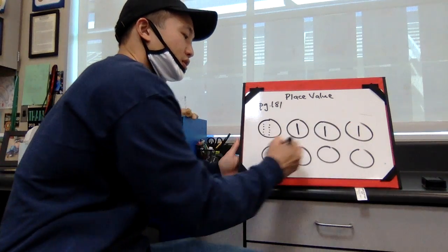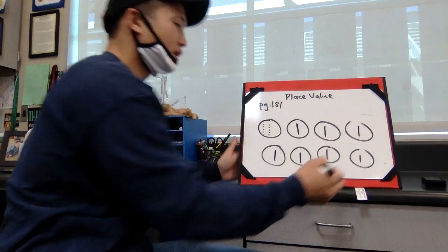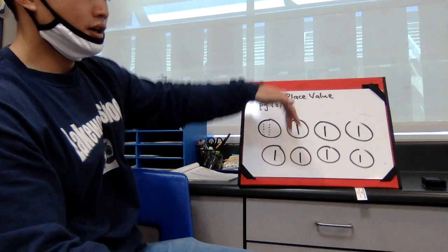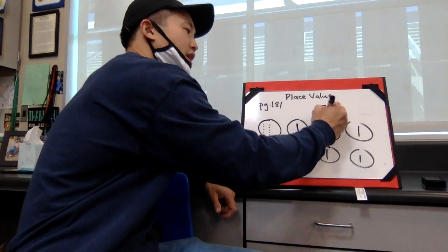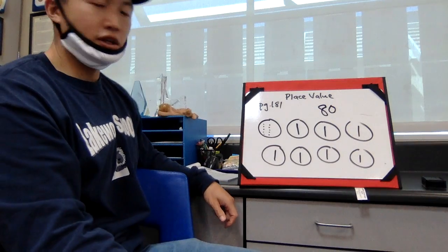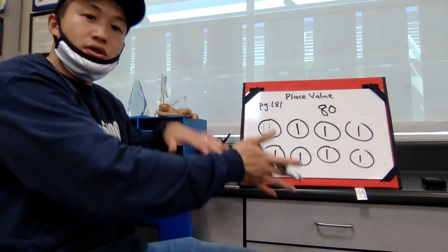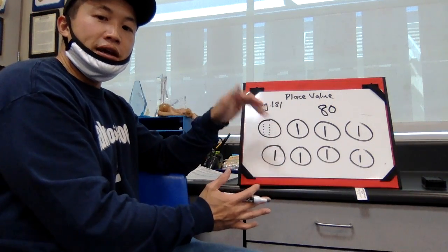So if I were to do this for each one, and then I counted it: ten, twenty, thirty, forty, fifty, sixty, seventy, eighty, you would have eighty party favors. That's what they're expecting you to do is to do some type of drawing like this to represent.